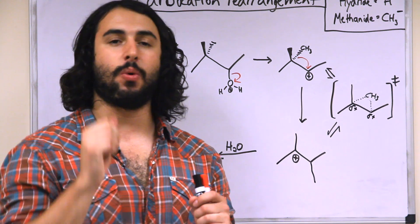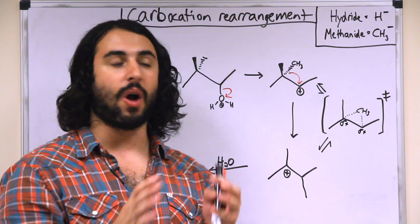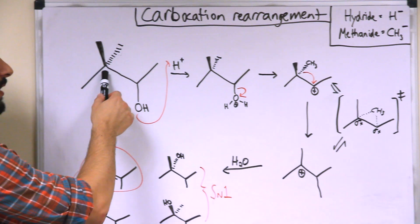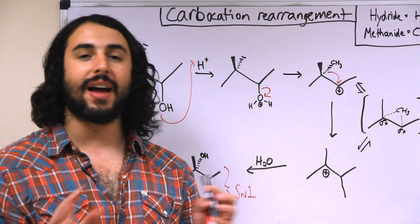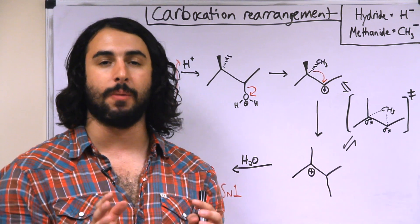So just to reiterate, the take home is that when you have a secondary carbocation adjacent to either a tertiary or quaternary carbon, if that can rearrange, it will do so by either doing a hydride or a methanide shift.